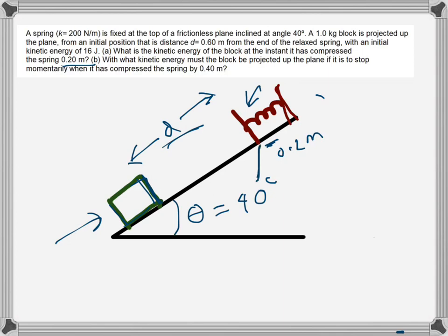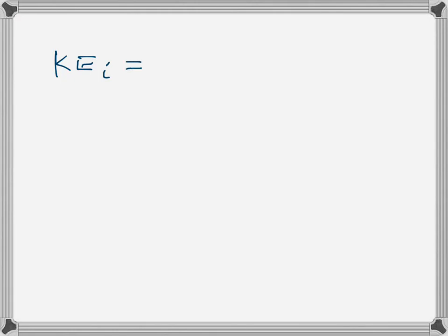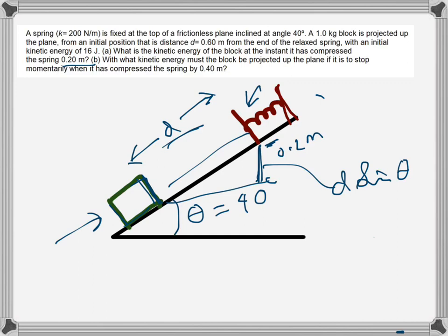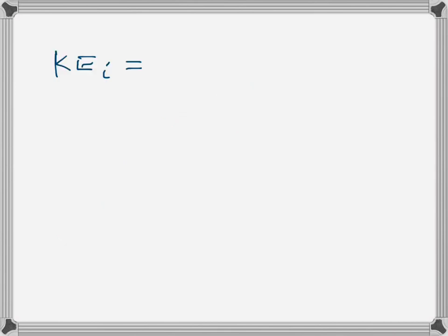The block has kinetic energy that is used to push the spring, and to reach the spring it has to overcome a certain height. If the distance is d, that height will be d·sinθ, where θ is 40 degrees. So the potential energy increases by that much, meaning the kinetic energy decreases by that much. The initial kinetic energy is 16 joules.